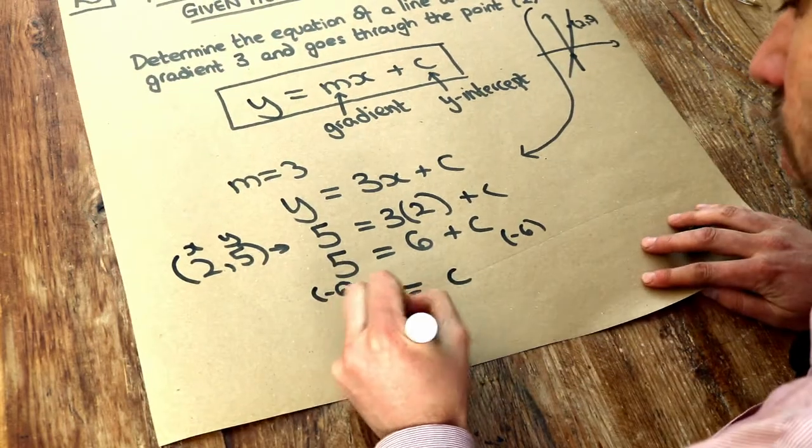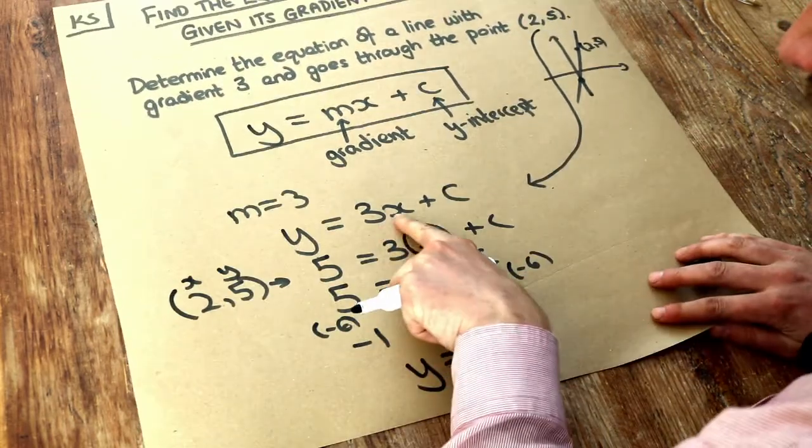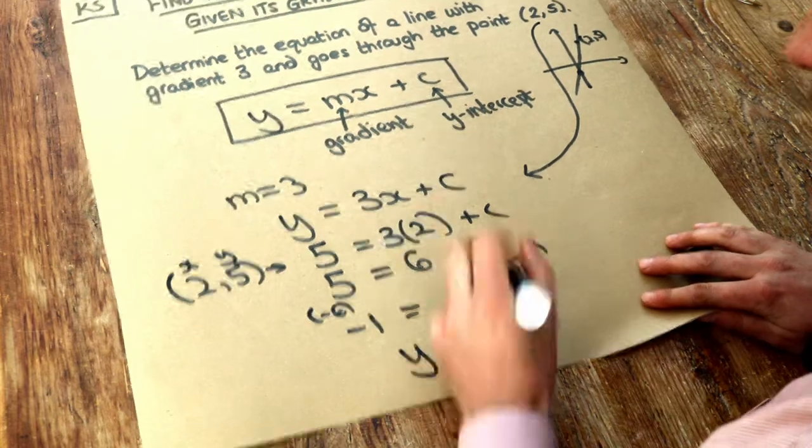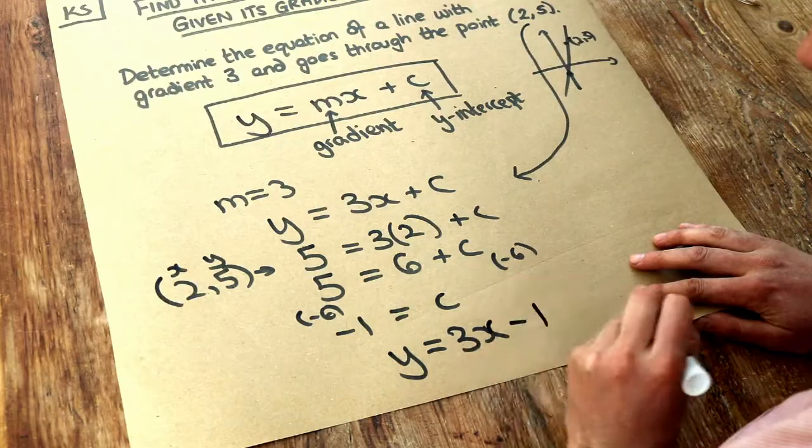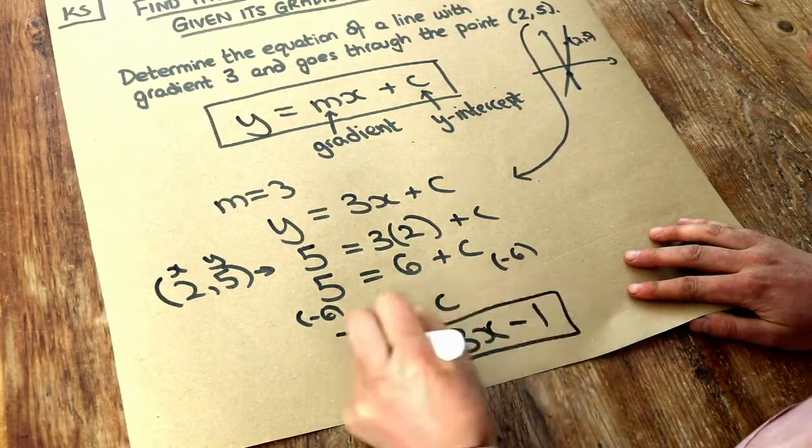And now we've got our equation. We've got y is equal to mx, 3x, plus c, so plus minus 1. But we could just write that as minus 1. So that is our final answer.